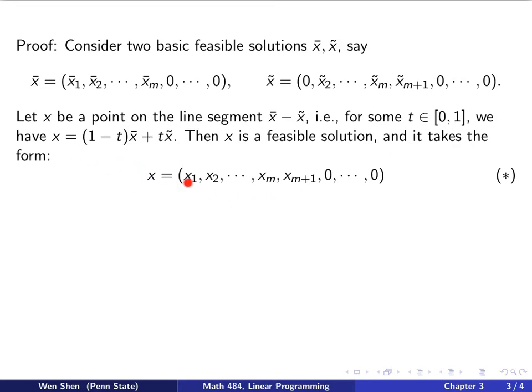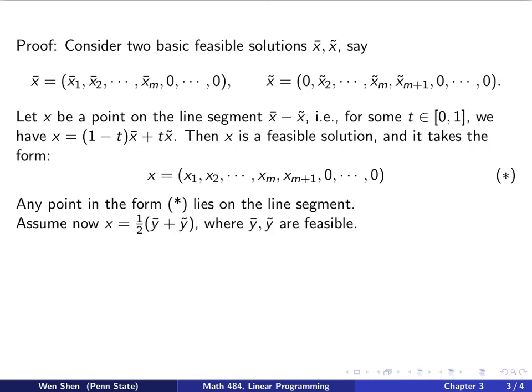So from x1 to xm plus 1, it will take some value, but what we want to emphasize is from xm plus 2 and on, all these will be 0. And these might or might not be 0. And then we also see that any point in this form here would lie on the line segment between x bar and x tilde. So we call this form star, and we'll refer back to it as a star.